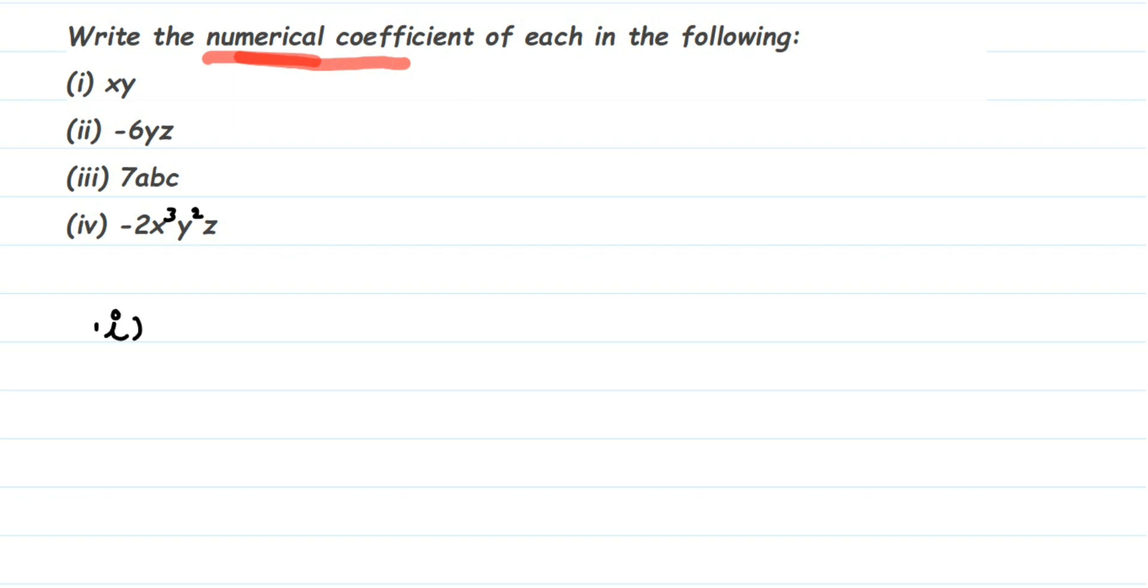In the first question, we have xy. You can see no number is present here. Numerical coefficients are present in the beginning of the term. It's not present here, which means one is present. It is 1xy. We don't write this one—one is normally omitted. But if there's no number, it means one is present.